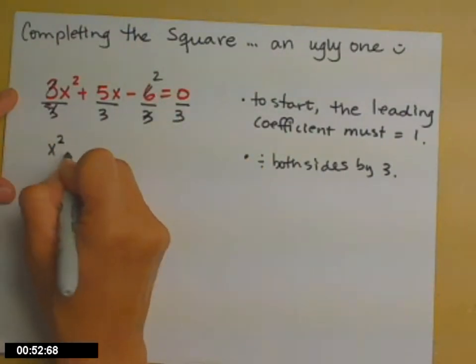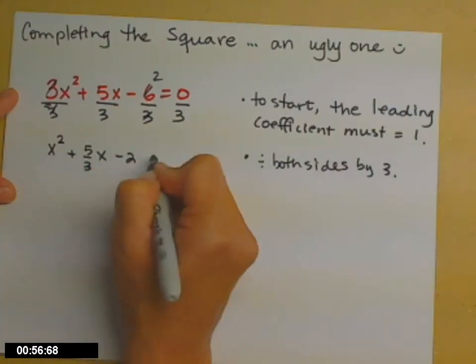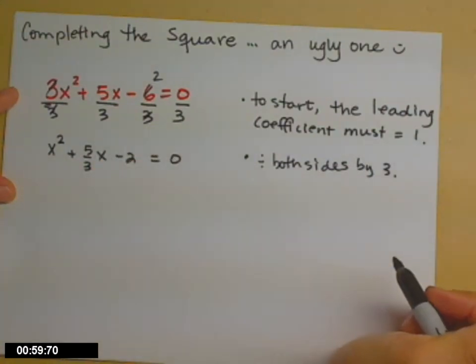It gets us to x squared plus 5 thirds x minus 2 equals 0. It's still a 0 on the right-hand side. 0 divided by 3 is still 0.